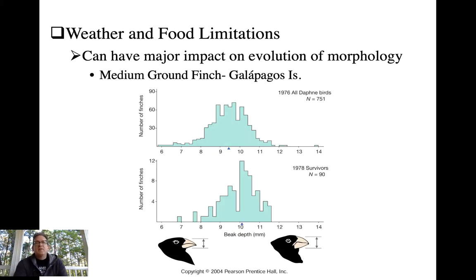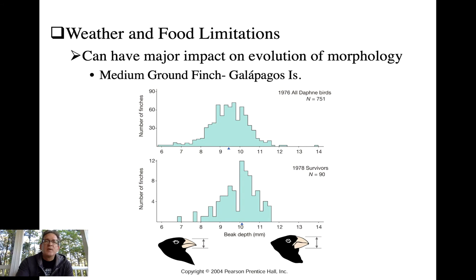Some famous studies have demonstrated that food limitations in a year can affect the population level in subsequent years, and also show how evolution works to make different morphologies adaptive in different scenarios. Here's a classic example: the medium ground finch in the Galápagos Islands on the specific island Daphne Major, studied by Peter and Rosemary Grant. In 1976, the average bill size was just under about 9.5 millimeters, with considerable variation — some birds had big bills, some had small bills.